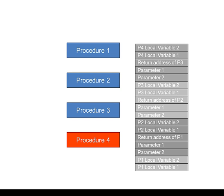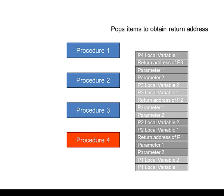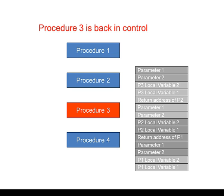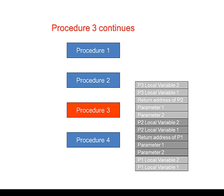When Procedure 4 has finished, the stack will be torn down, so Procedure 4 is now returning control to Procedure 3. First of all, any of Procedure 4's local variables are popped off the stack. Procedure 4 can then pop off the return address to repopulate the program counter and return control back to Procedure 3. In this particular scheme, Procedure 3 is responsible for cleaning up the rest of Procedure 4's stack frame, so Procedure 3 is now back in control and can pick up from where it left off.